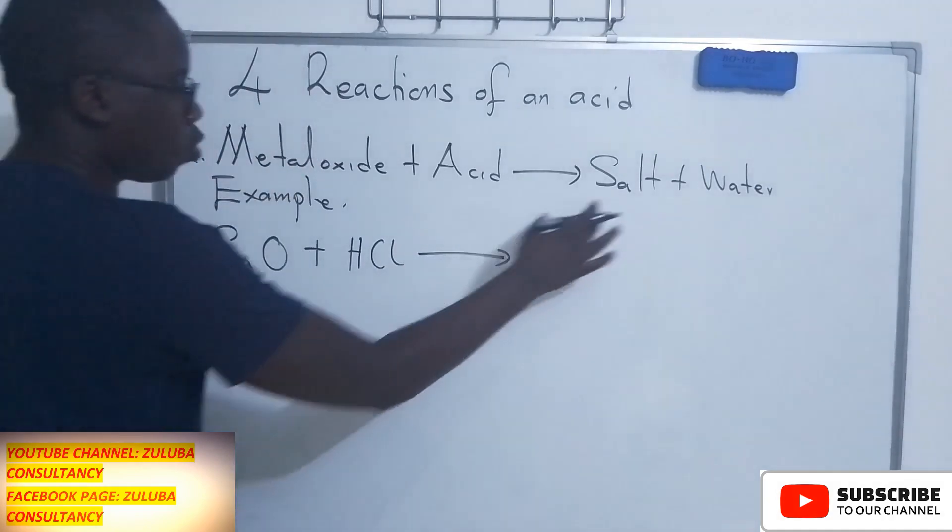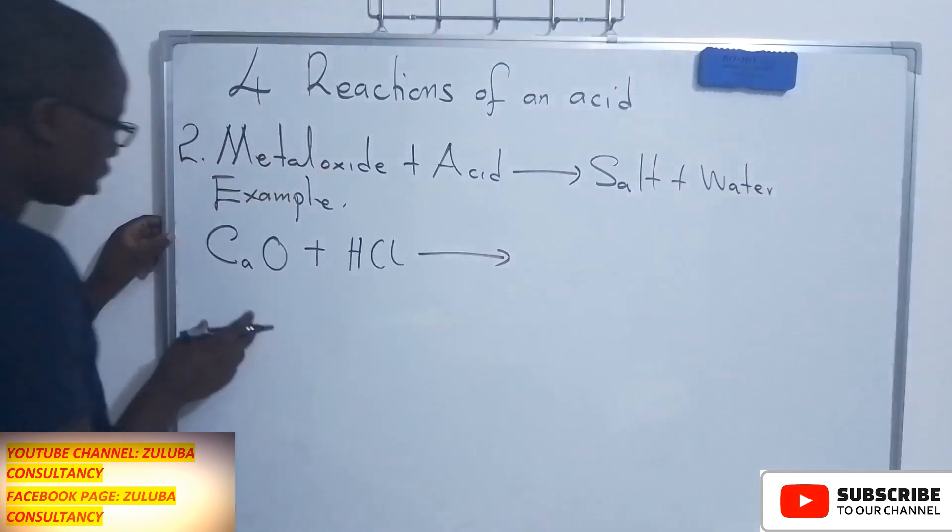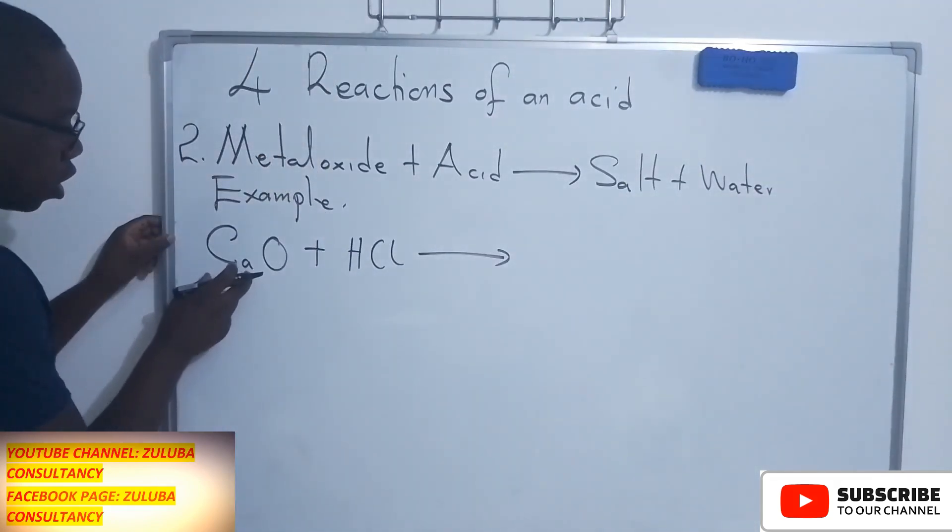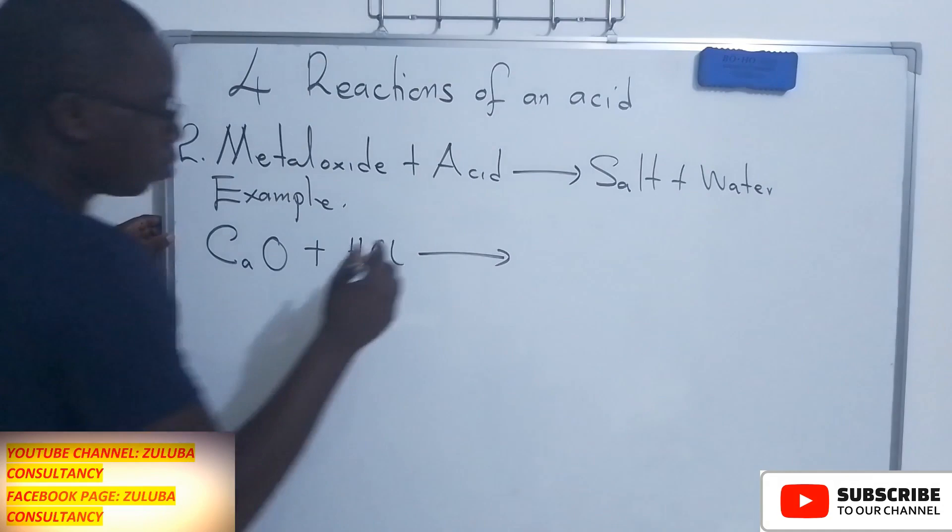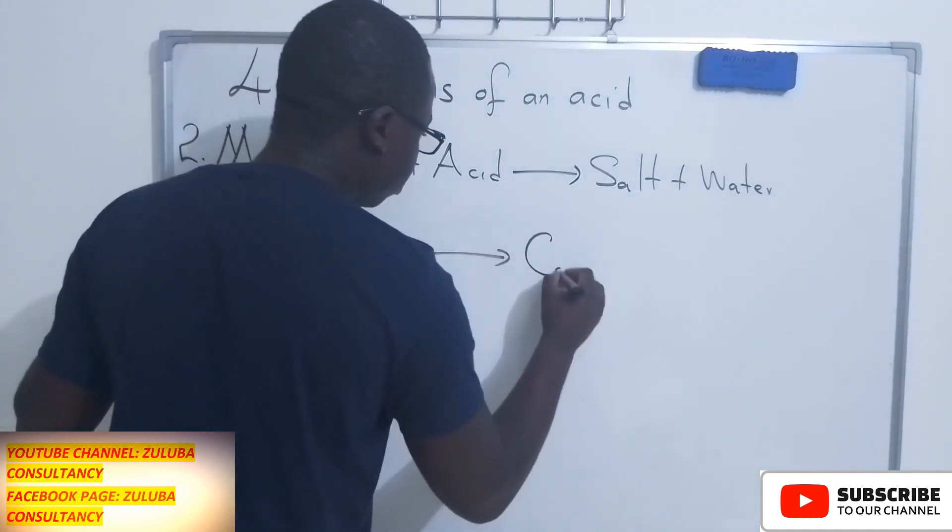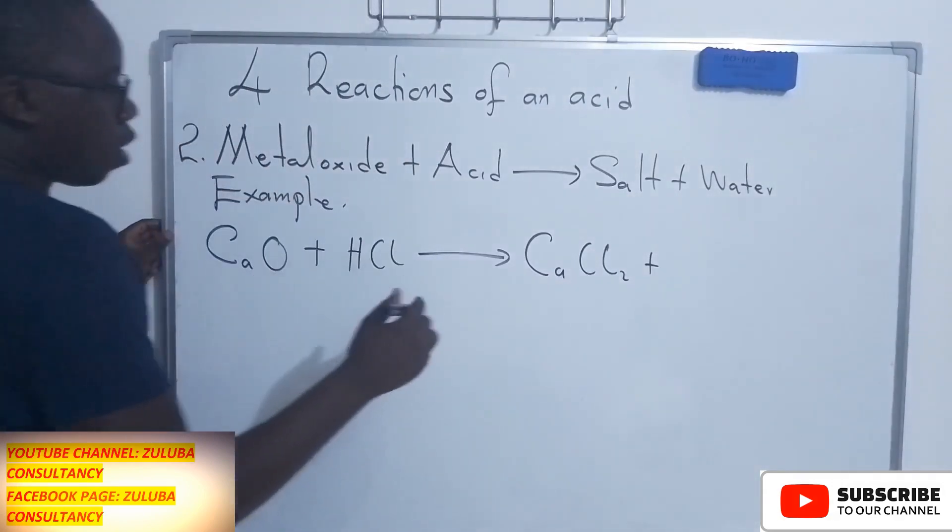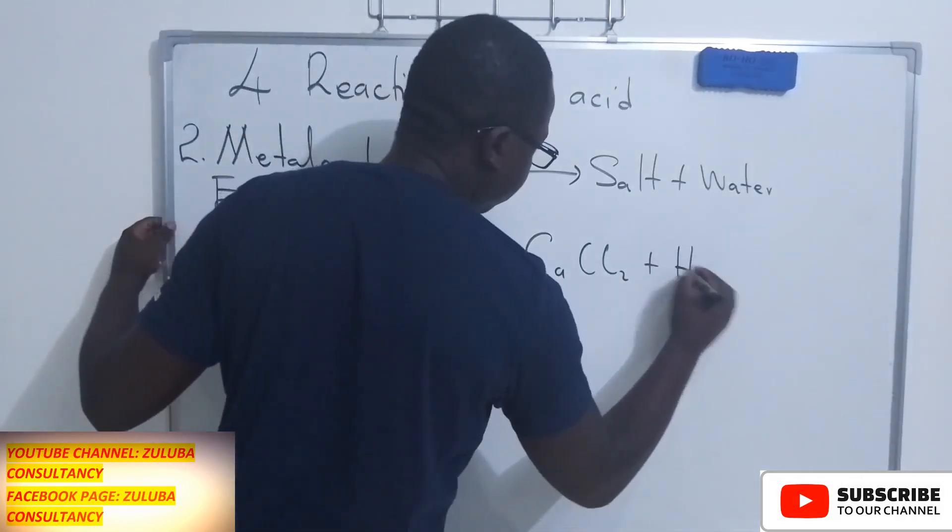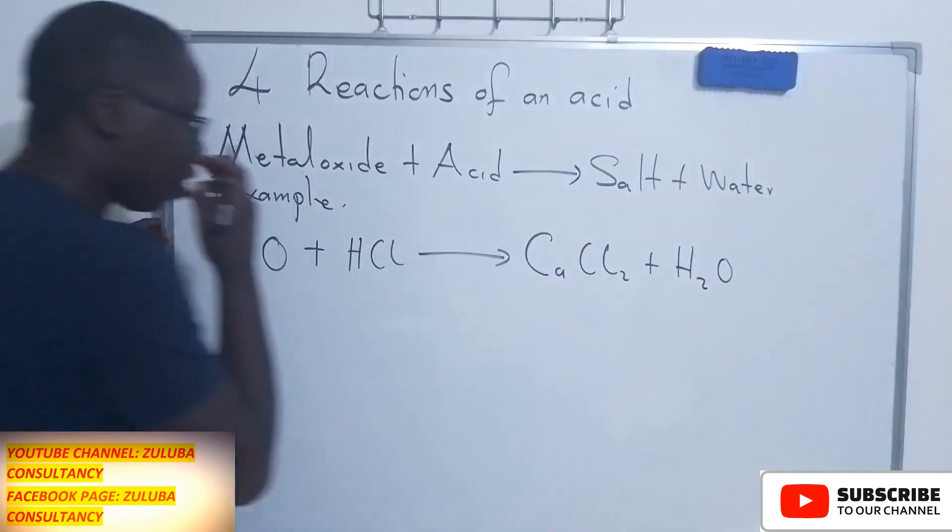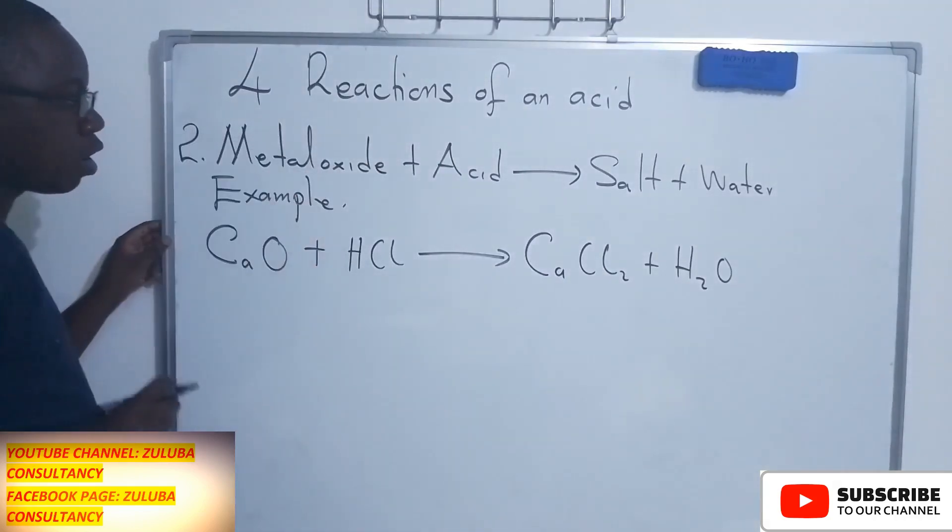The product we have said should be salt and water. So the salt will be calcium chloride, and we are going to have water. So these are the products when a metal oxide reacts with an acid.